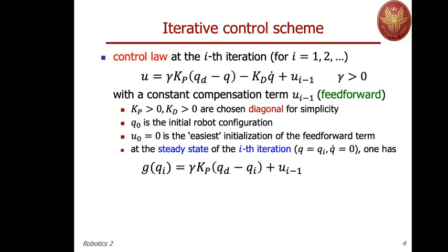If we apply this control — so in the first iteration this would be exactly PD control with some positive gain γ added to the proportional matrix — we will find a steady state which in general is not the desired Qd. Let's call the steady state at the i-th iteration QI, with Q̇ = 0. The balance at this steady state will be between our control law with Q̇ = 0 when we reach configuration QI: γKp times (Qd − QI) plus the current feedforward UI will balance the gravity at that configuration.